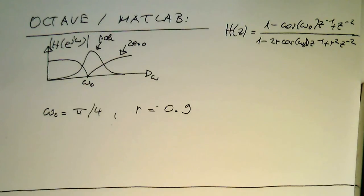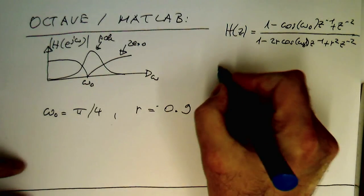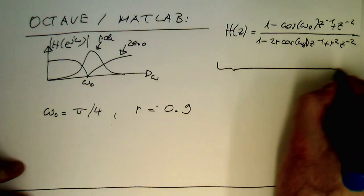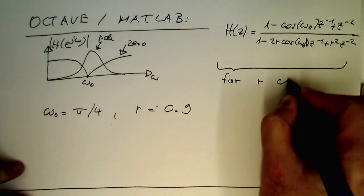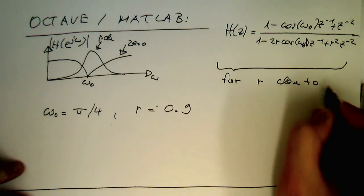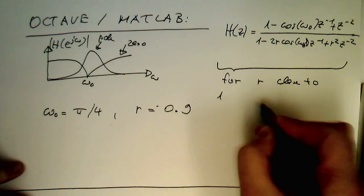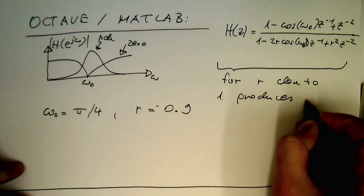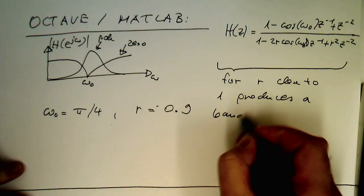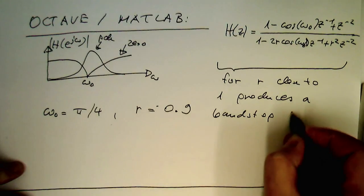So the surprising result is that this function here, this function for R close to 1, produces a band stop filter.